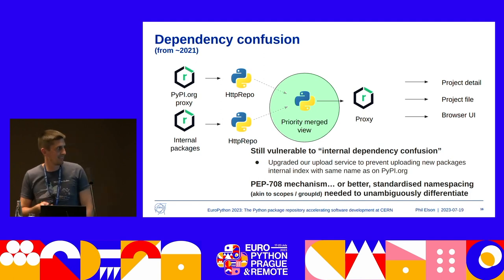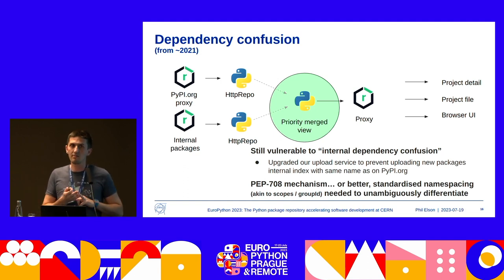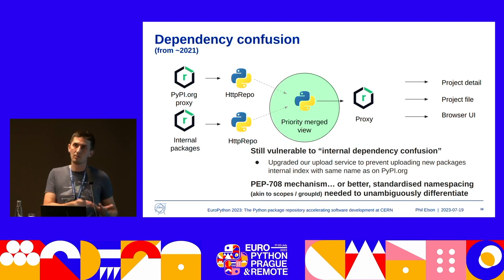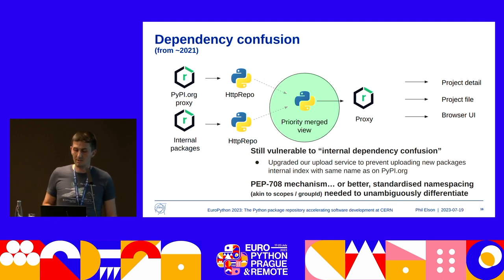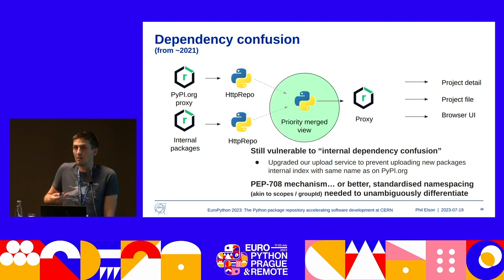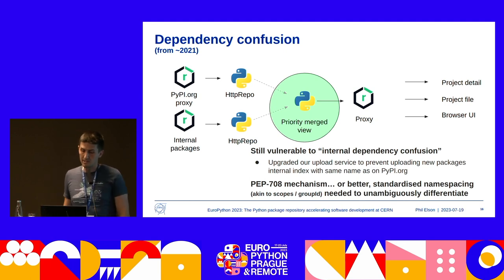To solve this, we fixed the internal dependency confusion in our upload service by prohibiting people from uploading packages which are already on pypi.org. The proper way to solve this is through a mechanism such as PEP 708, which standardizes and fixes dependency confusion. But in my opinion, having some namespacing mechanism would be further preferable. PEP 708 is still in draft.